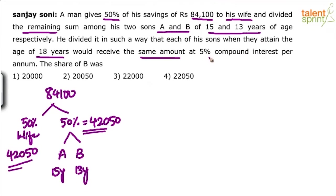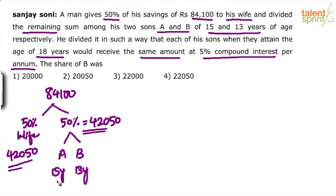At what rate? At 5% compound interest per annum — the bank pays 5% compound interest per annum. He has divided the amount in such a way that both the children would get 5% per annum compound interest, but the amount was divided such that when both of them become 18 years old, the amount paid by the bank to each one of them is the same. If they have to become 18 years old, A has to spend 3 years and B has to spend 5 years.